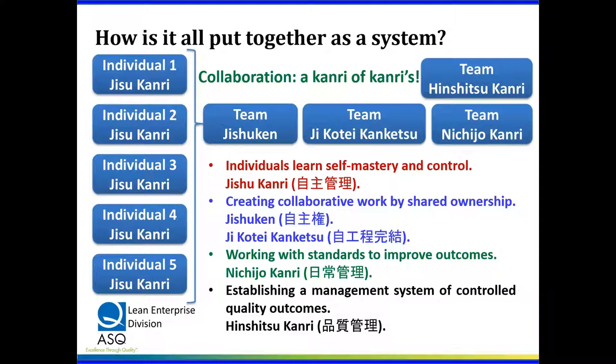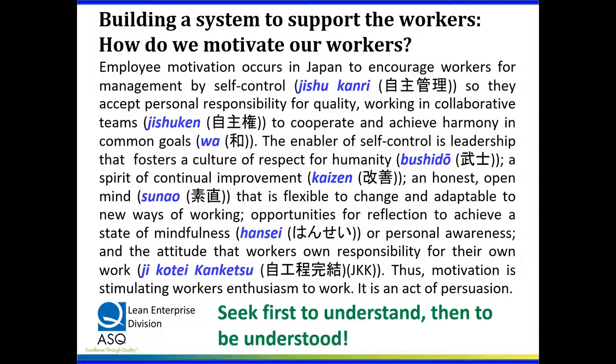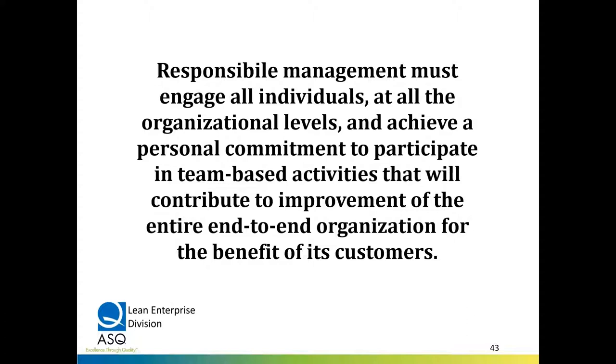When we put this all together in the system, we have individuals operating Jisoo kanri, coming together as a team practicing J-kotai kenkatsu — process ownership — in the daily management system, and then being challenged externally by a quality management system team. All of this is a collaboration in a kanri of kanrutsu. These practices reflect a culture of respect for humanity — fundamentally the Japanese way of having honor, called bushido — the spirit of continual improvement, open honest mindset called Tsanow, done through personal reflection called hensei, very Buddhist in building personal awareness. The attitude we take is we own the work.